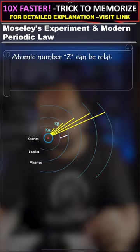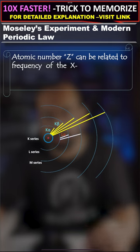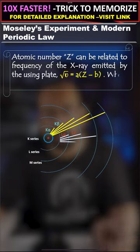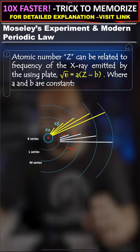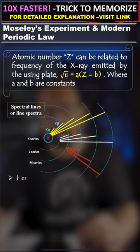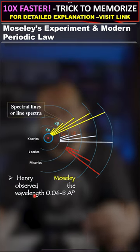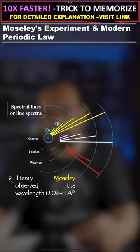Atomic number Z can be related to the frequency of the x-ray emitted by using the equation: root nu equals a into (Z minus b), where a and b are constants. Henry Moseley observed wavelengths of 0.04 to 8 Angstrom.